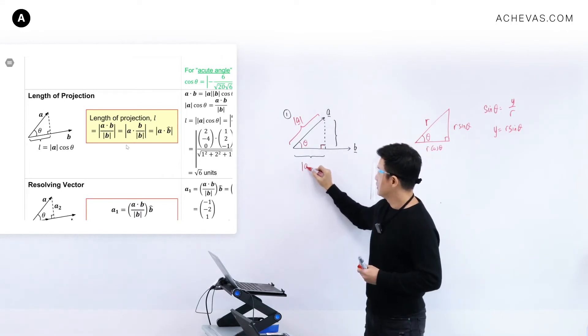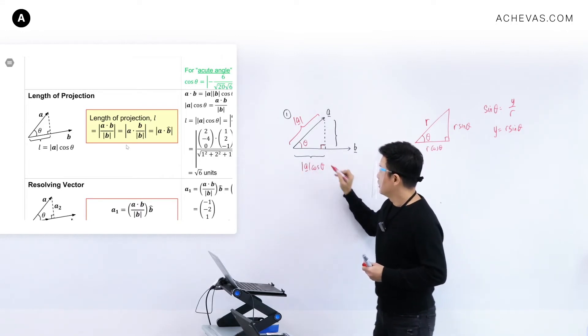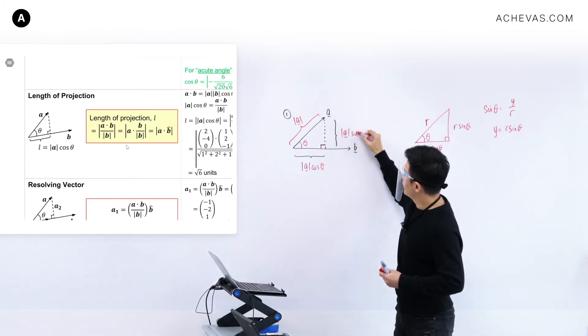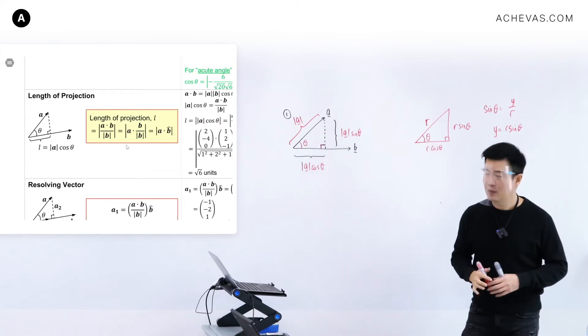Which means that this distance here is modulus of A, cosine theta. This distance here is modulus of A, sine theta. Any question?